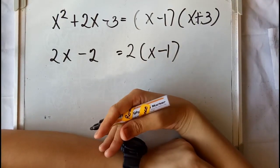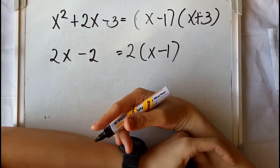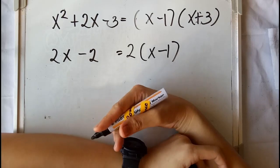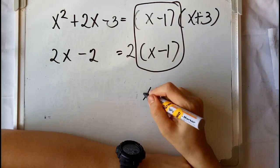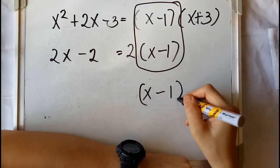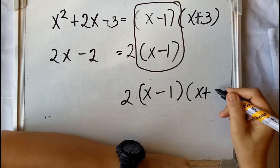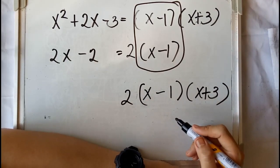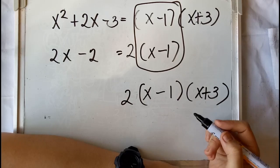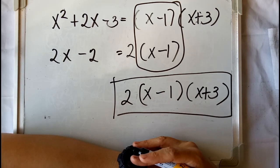Like the previous examples, all we need to do is find out if there are common factors in both given expressions. Here we have (x minus 1) as a common factor. We may now copy (x minus 1) as well as the remaining factors and find their product. We have 2 times (x minus 1) times (x plus 3), and this is the least common multiple of x squared plus 2x minus 3 and 2x minus 2.